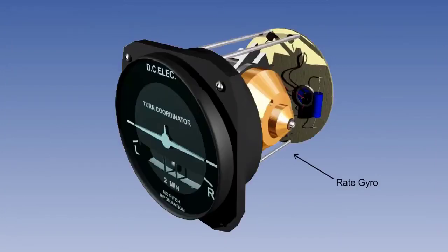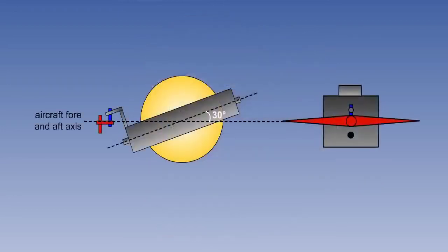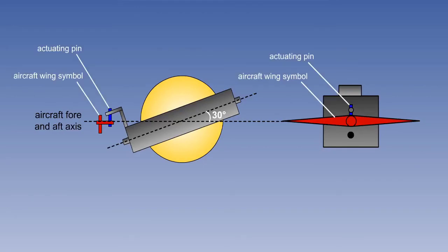The turn coordinator is a development of the turn and slip indicator. From the constructional point of view, the difference between the turn and slip indicator and the turn coordinator is that the rate gyro axis in the turn coordinator is inclined to the fore and aft axis of the aircraft by approximately 30 degrees. This makes the gyro sensitive to aircraft roll or bank, as well as to yaw or turn. An actuating pin and claw mechanism transmits the precession movement of the gyro to the aircraft wing symbol on the face of the instrument.